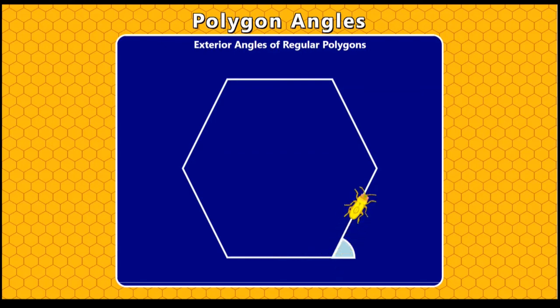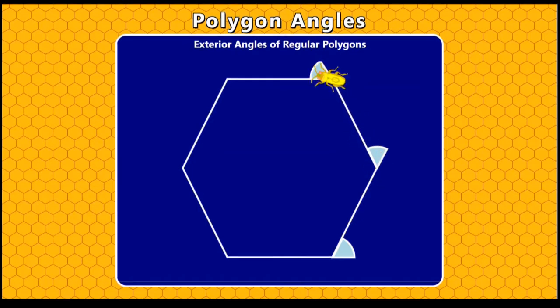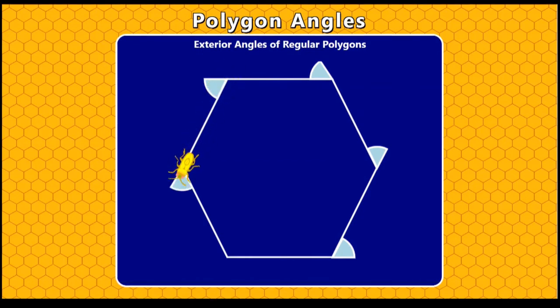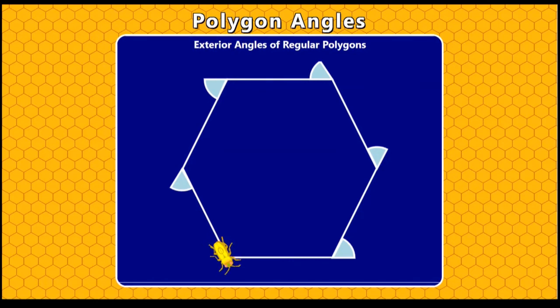This is Barbara Bug. She's walking along the sides of this regular hexagon. And as she gets to the end of each of the sides, she turns through an angle that will point her in the direction of the next side. Can you see that she's walked all the way around and turned six times? Each of those angles is called an exterior angle of the polygon.